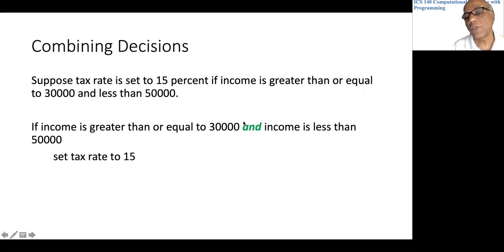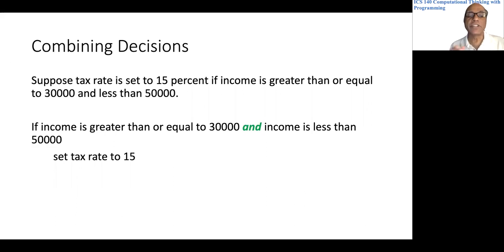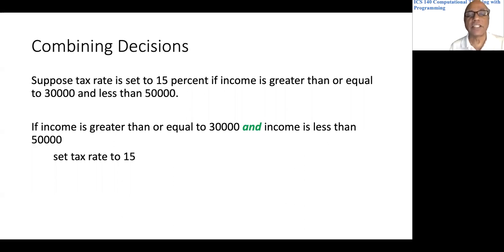For that we use 'and.' 'And' is called a logical operator, sometimes called a Boolean operator. It takes two conditions, and if both conditions are true, the whole big condition is true. If either condition is false, the big condition is false.